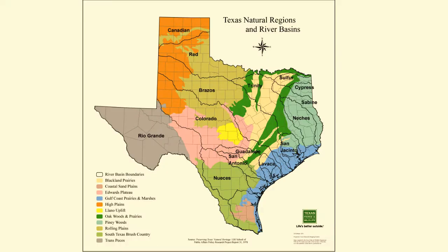Now we can often see the close tie between land and water. Texas has 11 major natural physiographic regions. These regions have different types of bedrock, soil, elevation, weather, and plants. These differences and the different ways the land is used in each affect the overall water quality and quantity in the watersheds.